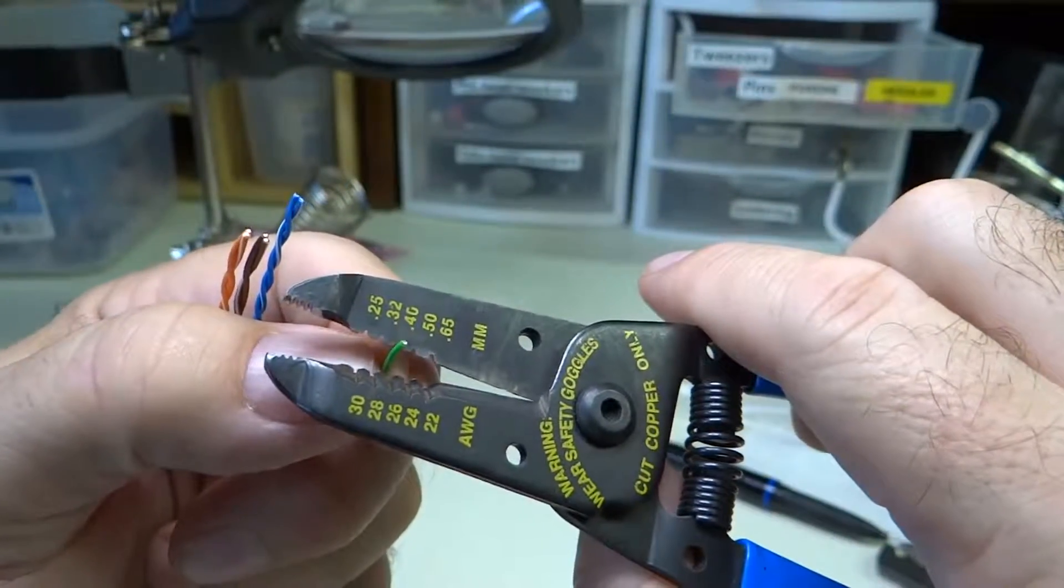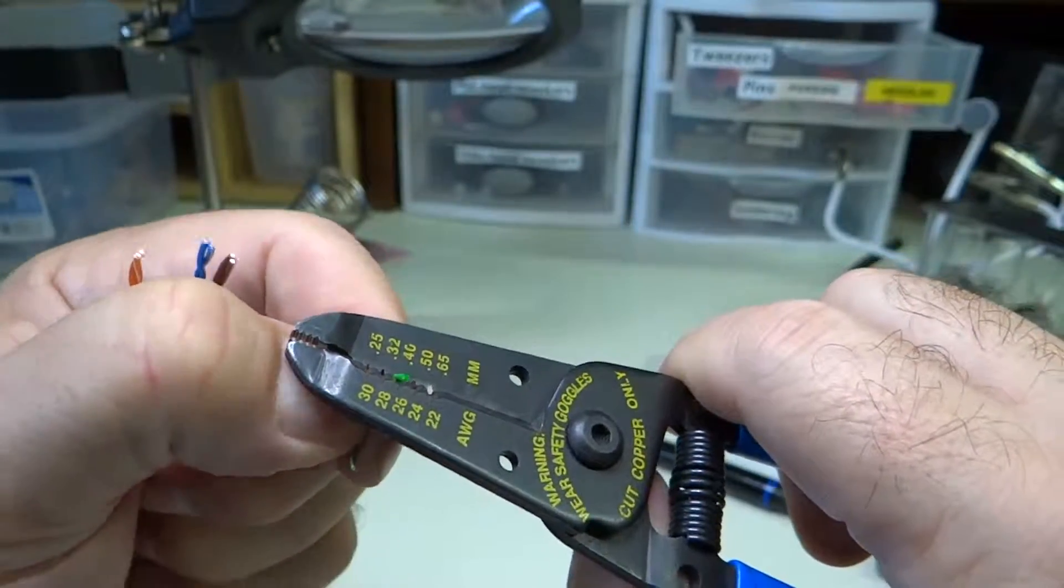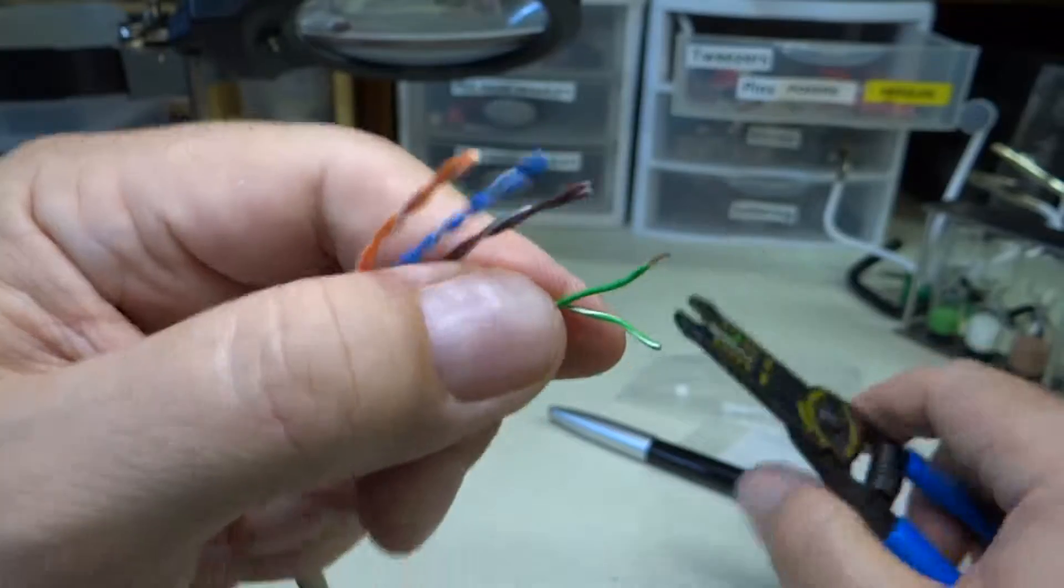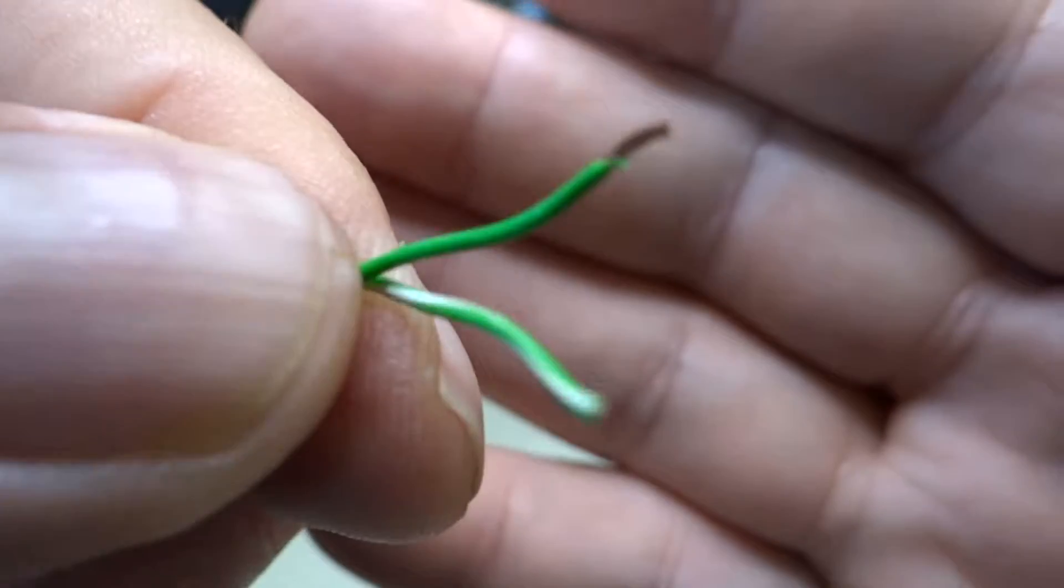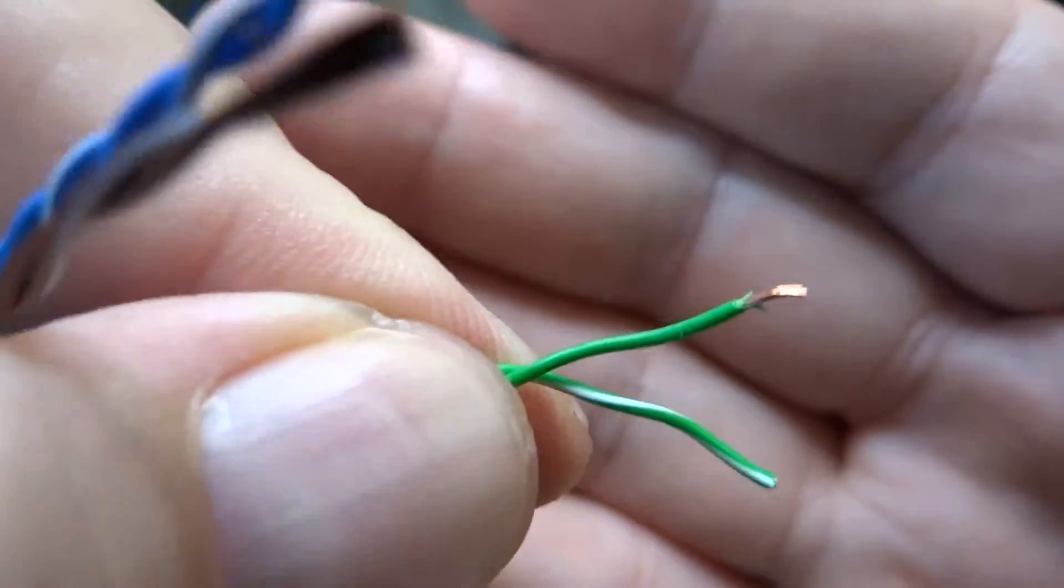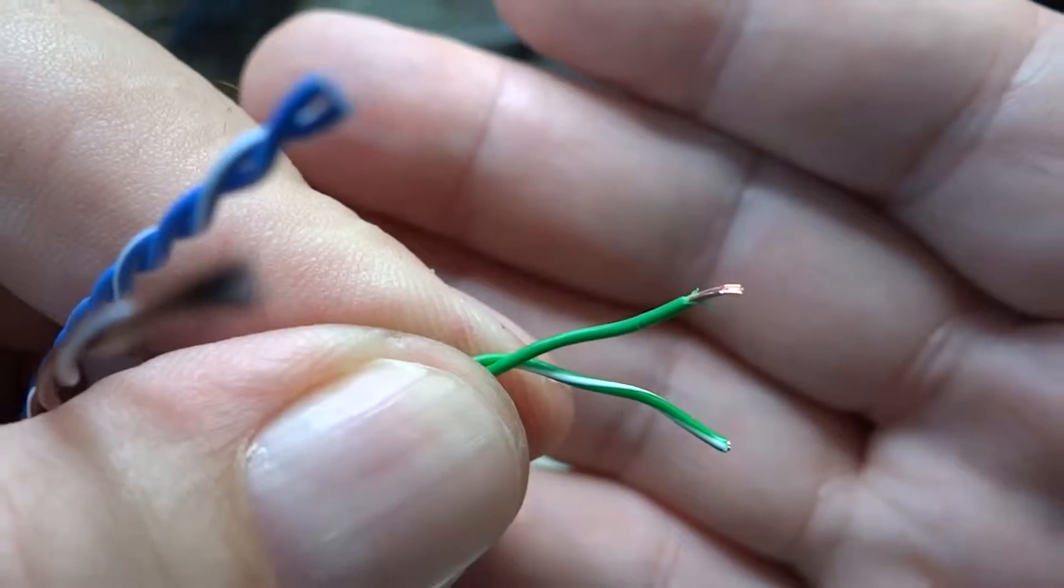Not sure exactly what gauge this is, but just be careful. Again, you don't want to nick the wires, but you want to give yourself plenty of copper wire to work with, right? So you can see a stripped-off piece of copper wire there, and we're going to do that with all the other wires.